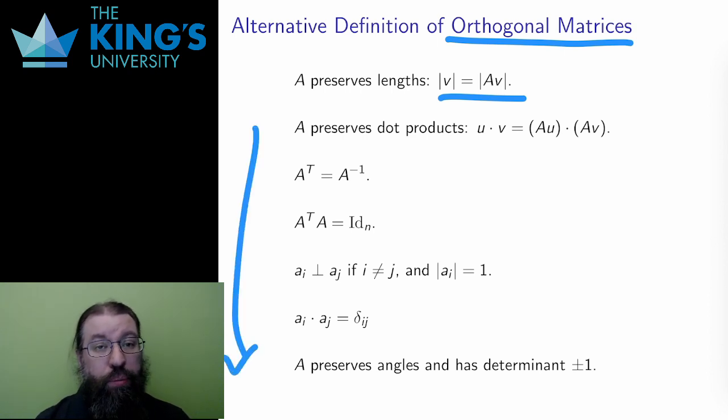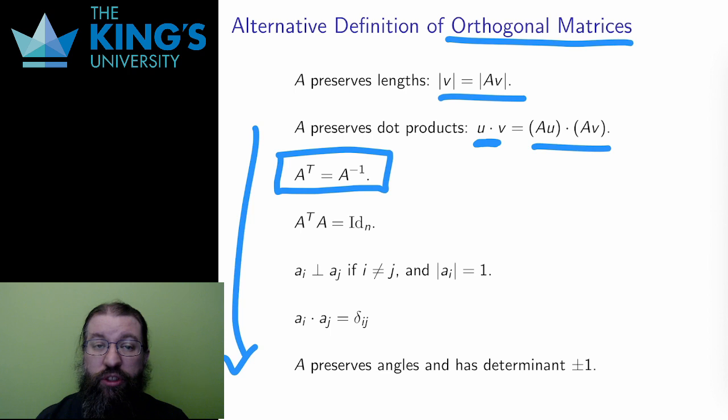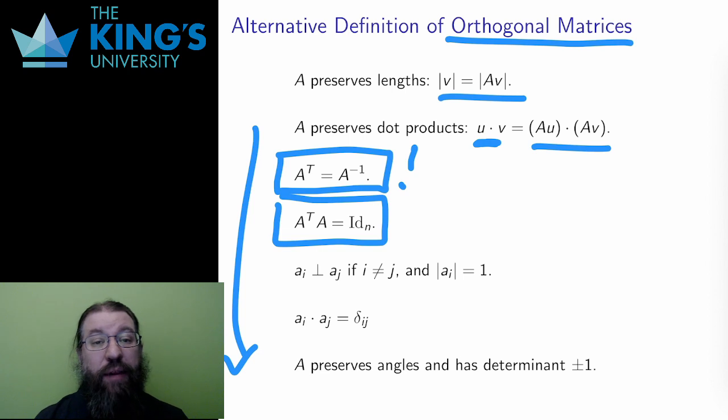An orthogonal matrix also preserves dot products. If I do a dot product before or after the transformation, the results are the same. The transpose which I just defined is very surprisingly equal to the inverse for an orthogonal matrix. This is very unusual. Calculating the inverse is usually a long process for row reduction. Just switching rows and columns usually does not produce the inverse. But it does for an orthogonal matrix. I can rephrase this by saying that A transpose times A is the identity matrix. And that's just the definition of the inverse, saying that A transpose is the inverse because if you multiply by A, you get the identity.